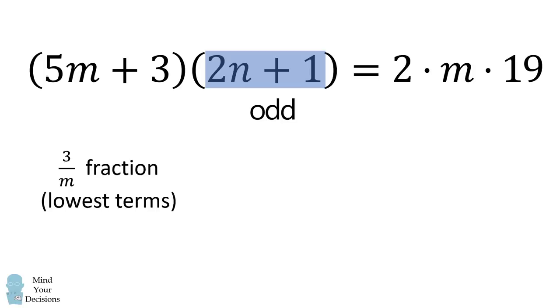Furthermore, 3 over m is a fraction in lowest terms, so m cannot be a multiple of 3. This means that m does not divide 5m plus 3. Then, because 3 is a prime number, m and 5m plus 3 are relatively prime.